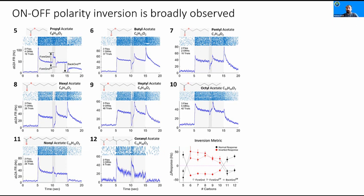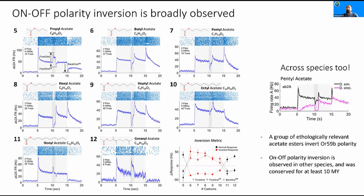This is an interesting finding. These acetate esters are a product of yeast fermentation, which flies feed on, so this is directly relevant to their life. More interestingly, this phenomenon is also observed across species — both Drosophila simulans and erecta have inverting AB2A neurons, suggesting this could be a general phenomenon in Drosophila species.